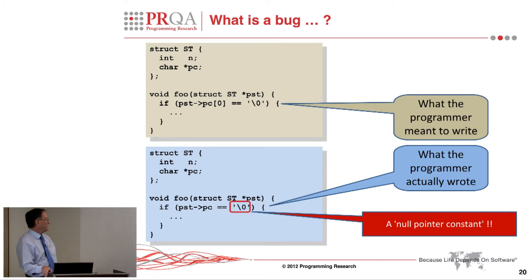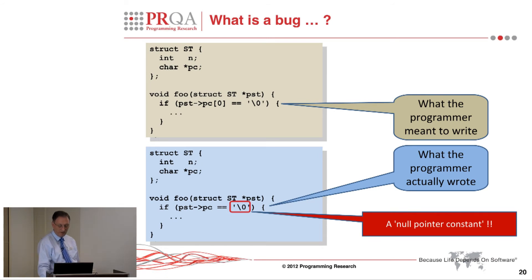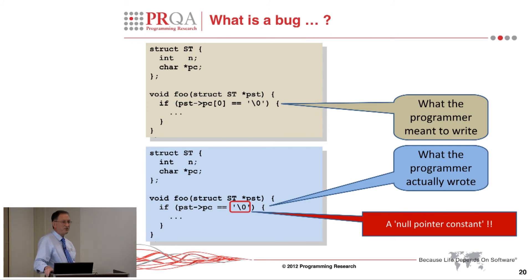The wonderful thing about the C language is that it's perfectly legal to compare a pointer with a null character. The C language in its wisdom decides that a null character can be used as a null pointer. So that is very much an example of C finding a square hole and putting a round peg in it.